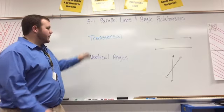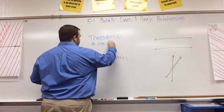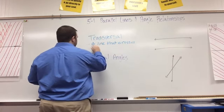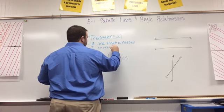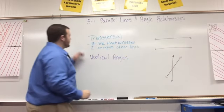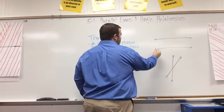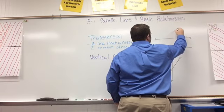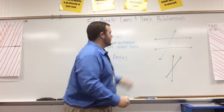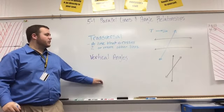The first definition is transversal. A transversal is a line that crosses two or more other lines. Here we have a set of parallel lines and I'm going to draw the transversal in blue. The blue line represents our transversal because it crosses two lines. We can put a little T for transversal with an arrow in our notes.